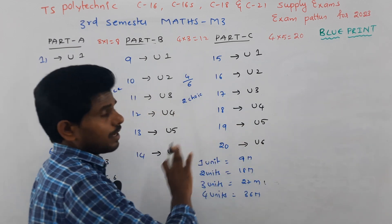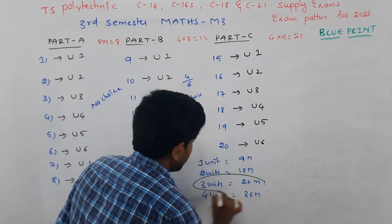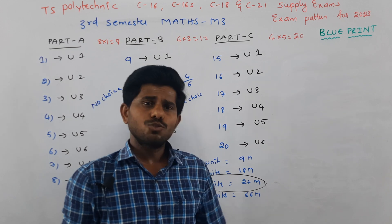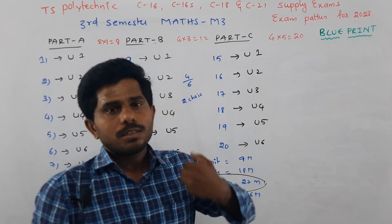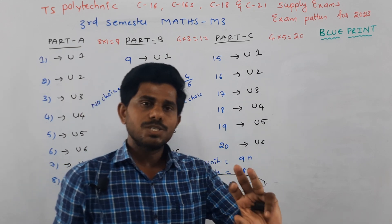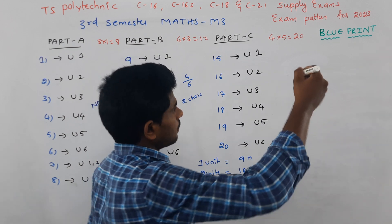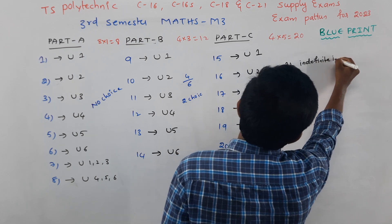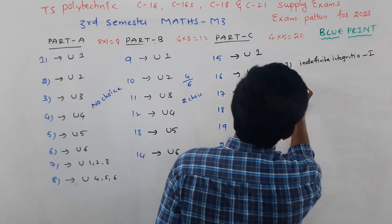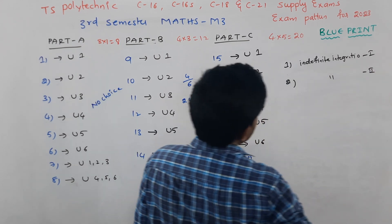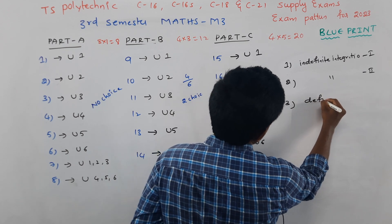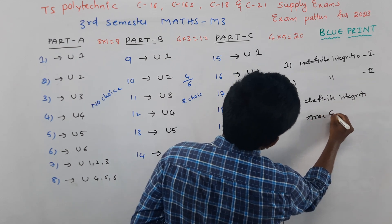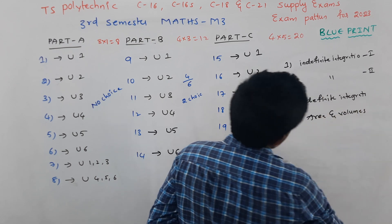To score 36 marks, three units are important. There are 6 units total. Unit 1 is indefinite integration part 1. Unit 2 is indefinite integration part 2. Unit 3 is definite integration. Unit 4 is areas and volumes — application of definite integration.